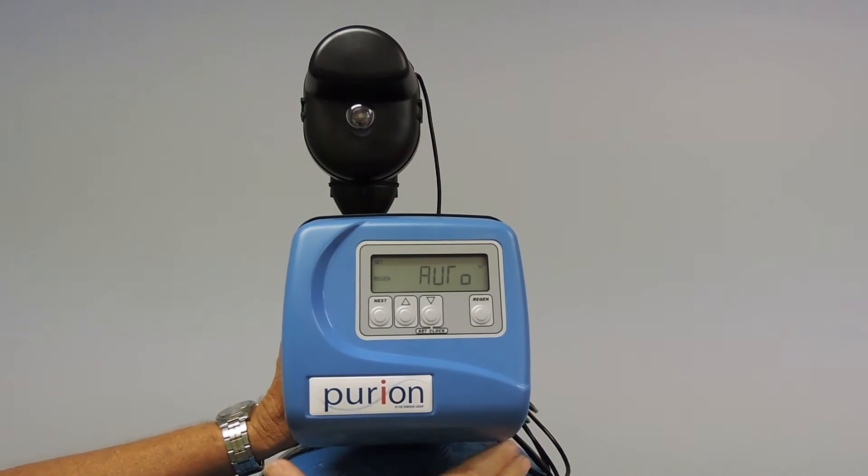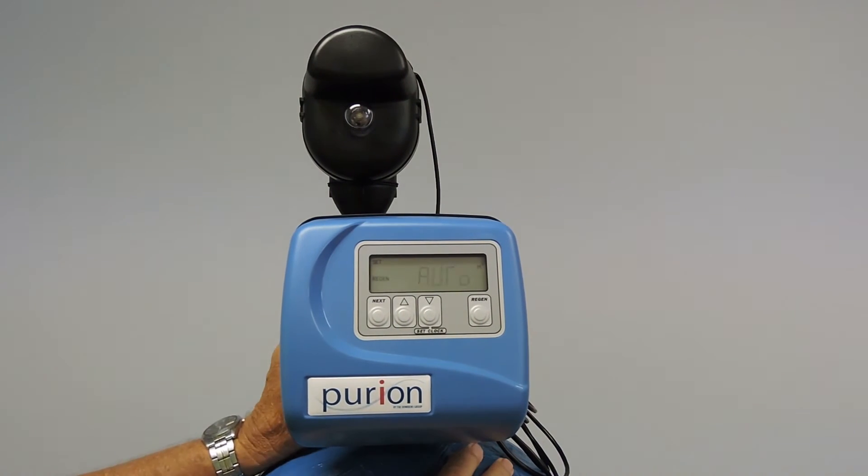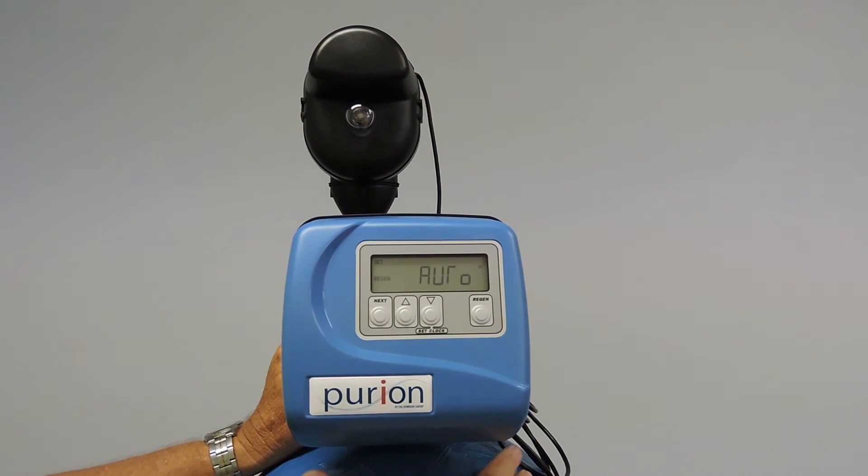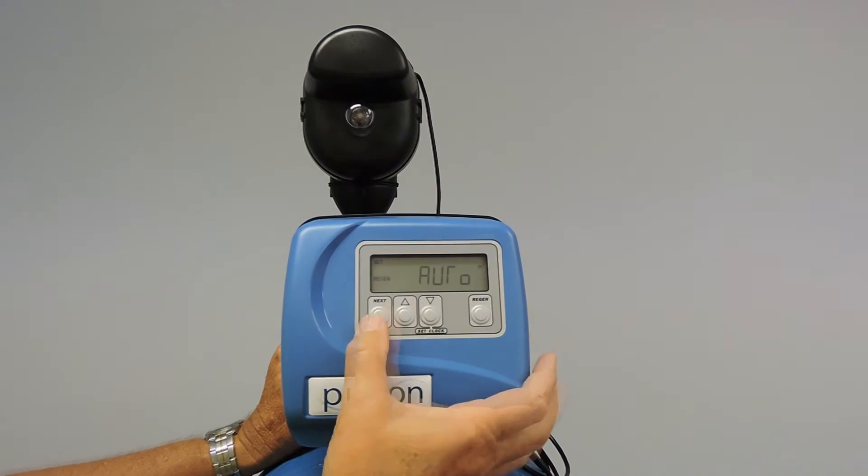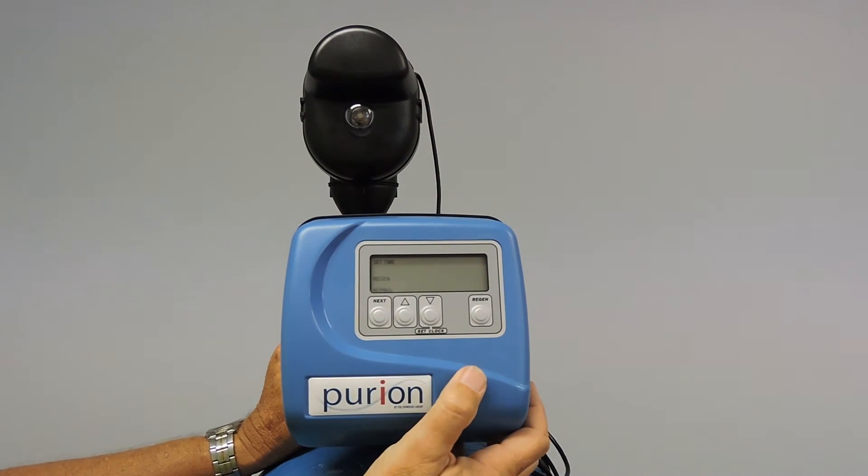And now we're into our regen. This is regen auto. We select this because the unit will automatically calculate when it needs to regenerate. It has a built in reserve using this feature. So we will accept that.